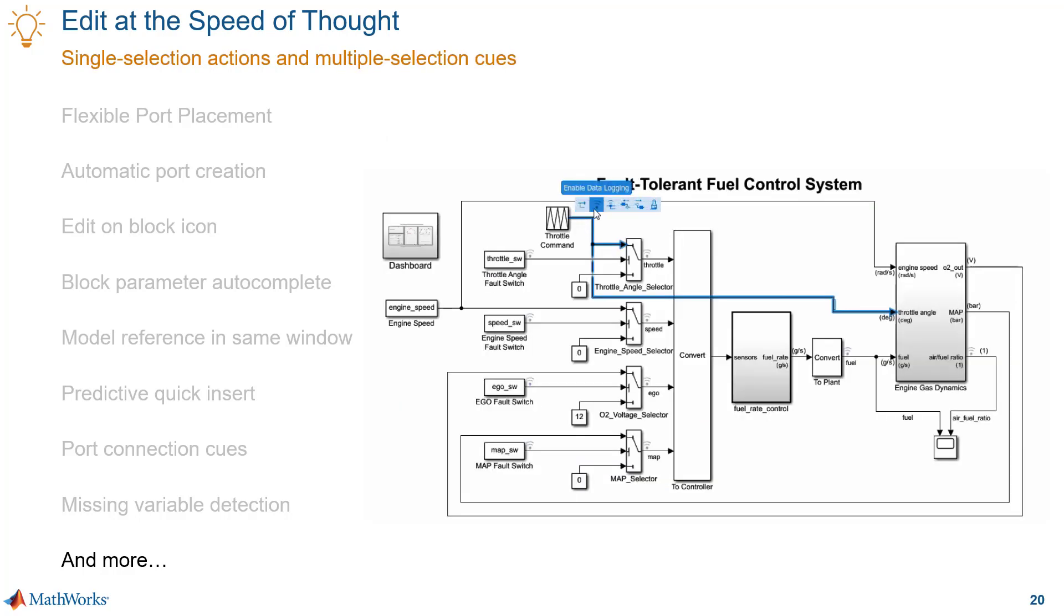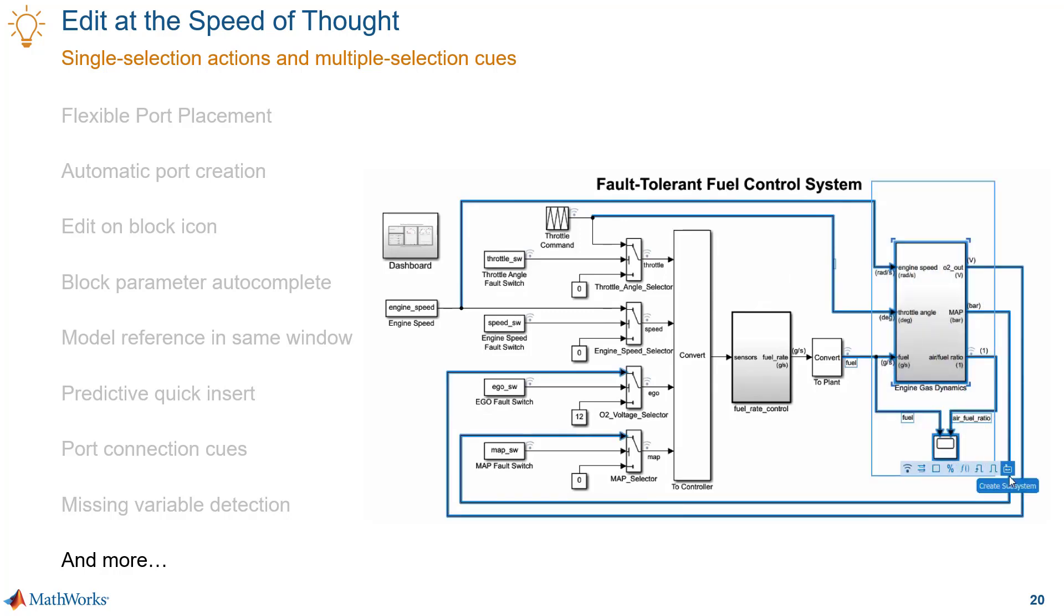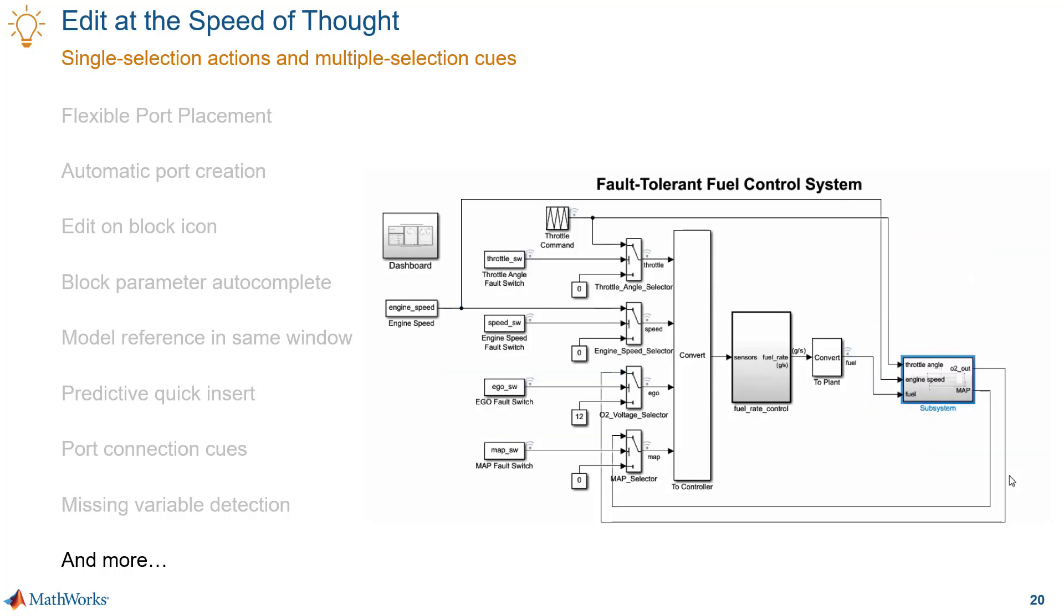This one is used for single and multiple selections. For individual elements like signals you can easily log and auto route. For multiple selections you can log, group, convert, or comment out those model elements with just a few clicks.